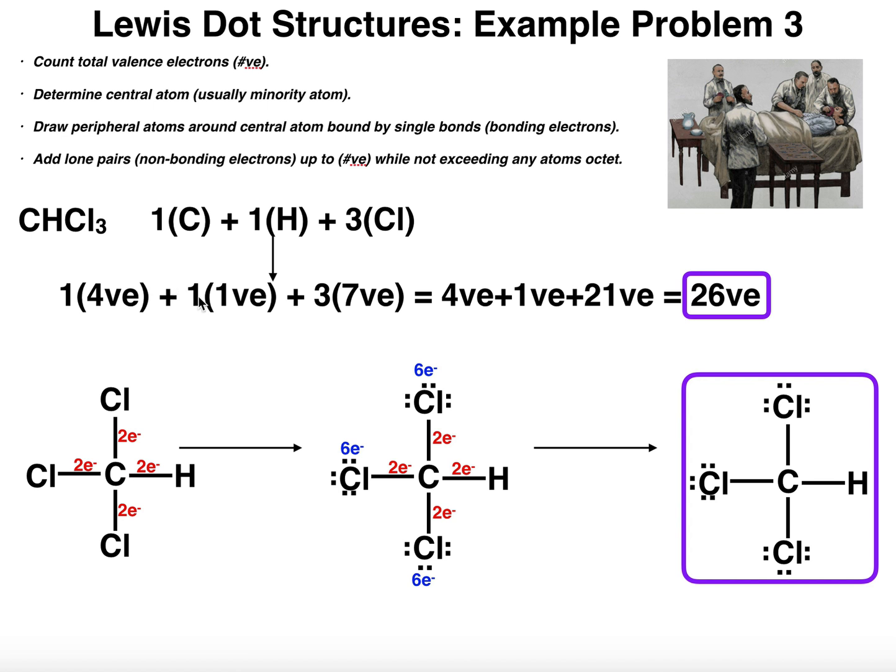So we have one times four plus one times one plus three times seven, which means four valence electrons from the carbon, one valence electron from the hydrogen, and twenty-one total valence electrons from the chlorines. We add that together and get a total for chloroform of twenty-six valence electrons. That's usually the most intensive step, just calculating how many electrons you have total.